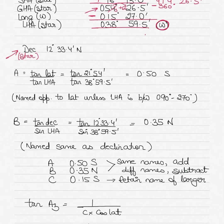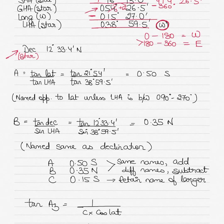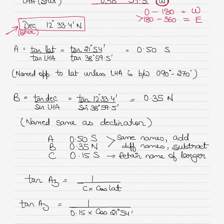The rule is: LHA between 0° and 180° is named West; LHA between 180° and 360° is named East. Our LHA of 38° 59.5' is between 0° and 180°, so it is named West. The declination of Rasalhague is found next to its SHA. Because stars are so far away, we normally do not apply a declination correction to a star's declination — that is only done for the Sun.